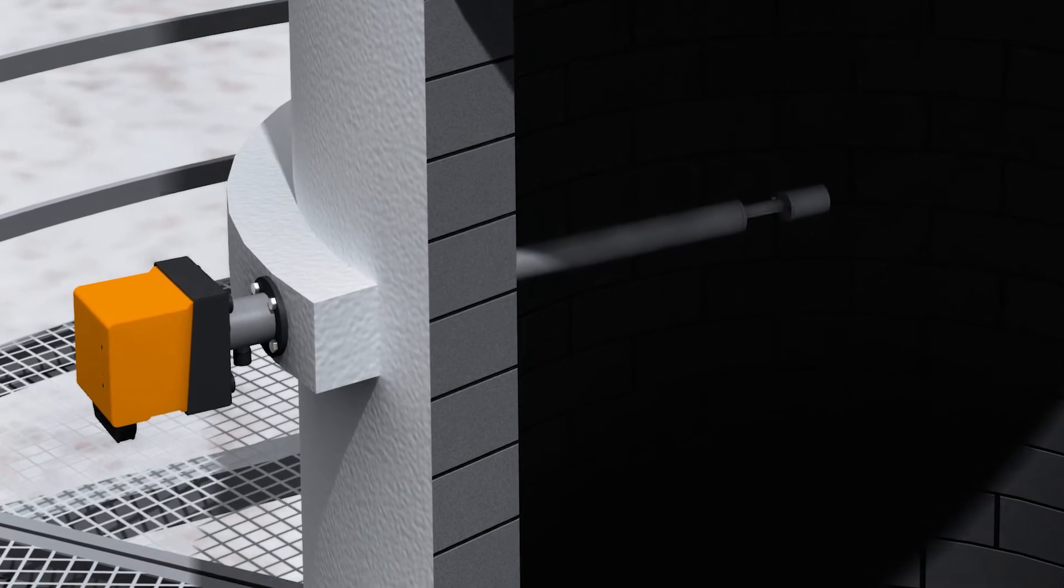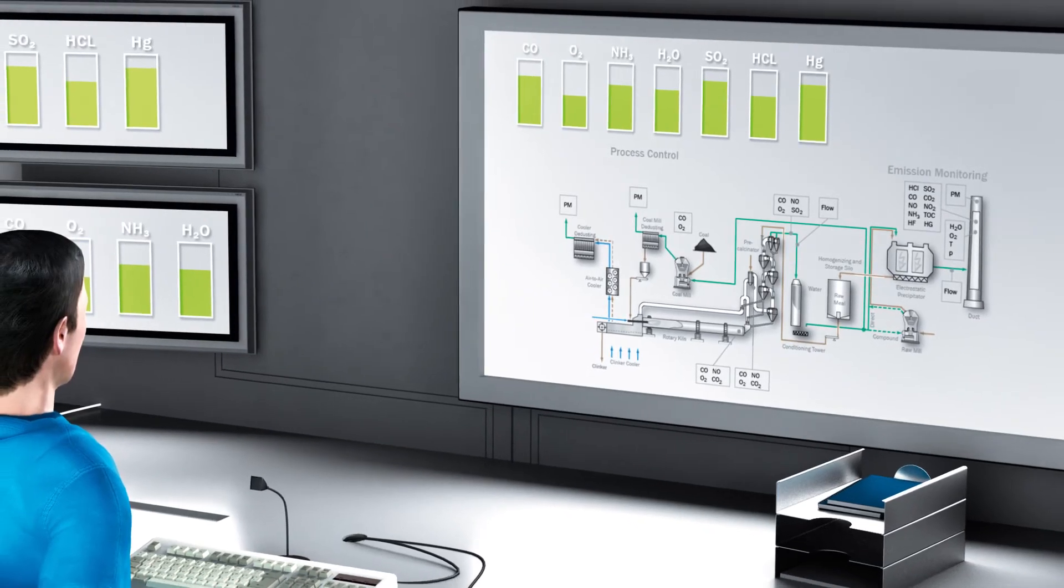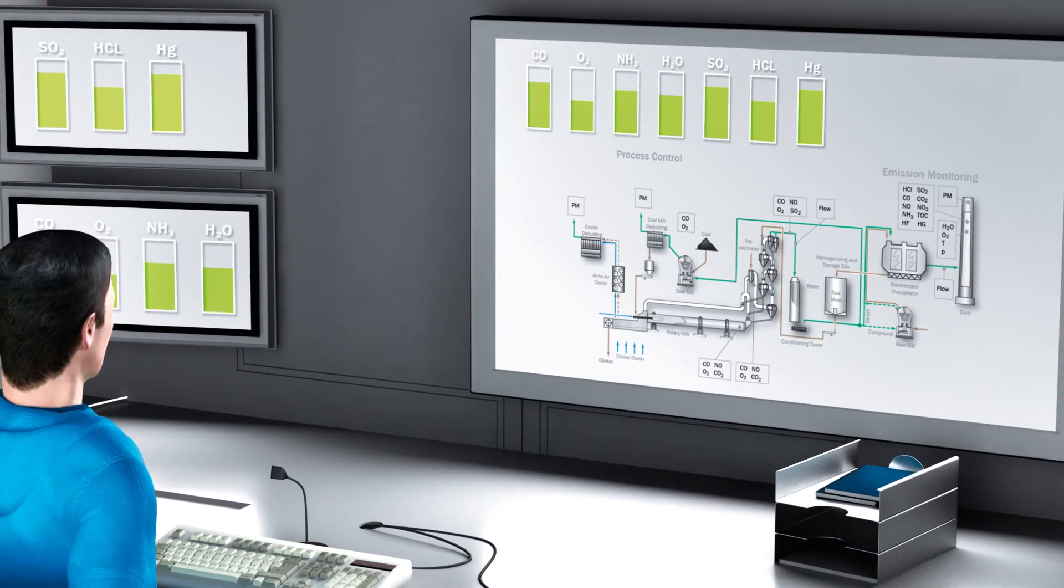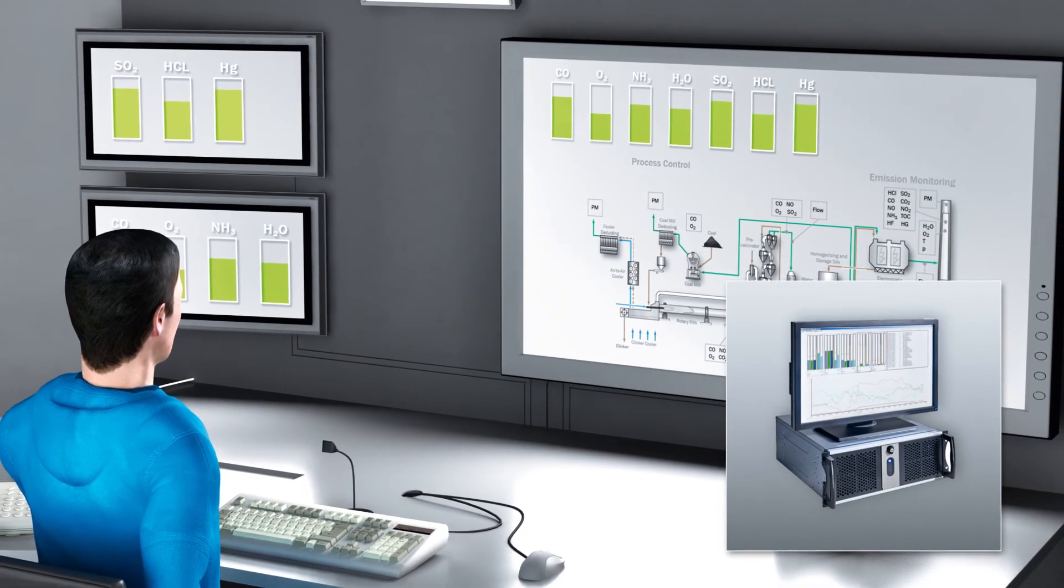Integrated self-monitoring reduces maintenance efforts for dust and flow measuring devices. The MEAC300 data acquisition system is ideal for determining, saving, normalizing, analyzing, displaying, and forwarding a continuous flow of data.